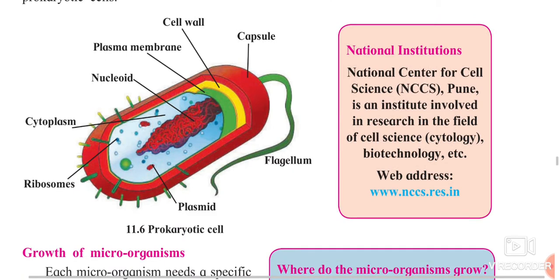You can clearly see in the image the flagellum, a tail-like structure, which helps the prokaryotic cell move easily. The cell wall is present, looking like a capsule structure. There are plasmids inside. You can see the cytoplasm, the liquidy substance which helps movement. The plasma membrane and cell wall are also there. There is a nucleoid — not a nucleus — in the prokaryotic cell.